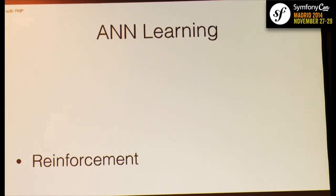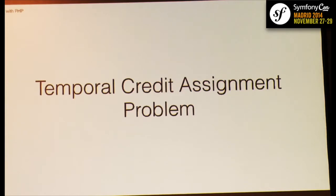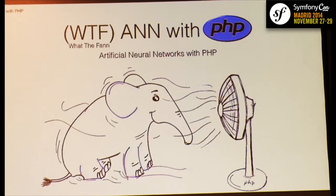There's one problem when using reinforcement learning with games, called the temporal credit assignment problem. In a game, you don't know if a move is good or bad until the game ends — or after several more moves. We'll see in the code how we tried to solve this problem, though it's not easy.